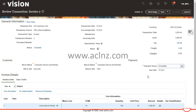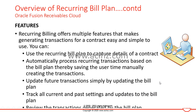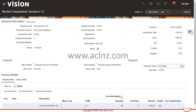Now let's go back to the PowerPoint slide to finish off the other details. As you can see, you can update future transactions simply by updating the bill plan, track all current and past settings and updates to the bill plan, and review the transactions generated by the bill plan. I've shown you the transaction generated by the bill plan and how you can update it — all from the same form.